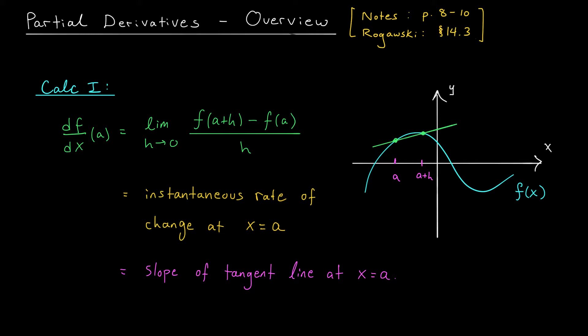The slope of this line is going to give us the rise over the run — it tells us how much our function's value changed proportional to how far we moved along the x-axis. The rise, the change in height, is given by f of a plus h minus f of a. And the run, the change in x value, is simply h. So the slope of this line is given by this quantity that you see here.